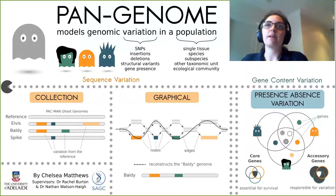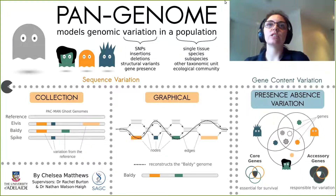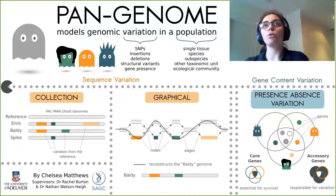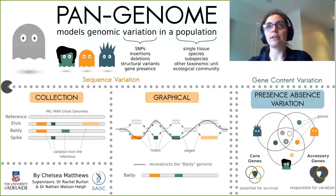Of the three types of pangenomes, a collection pangenome is the simplest. It's literally just a collection of genomic sequence from a single population, and those sequences could be anything from raw reads to reference quality assemblies. Here we've got the Pac-Man ghost reference genome and the genomes of three other members of the Pac-Man ghost population.